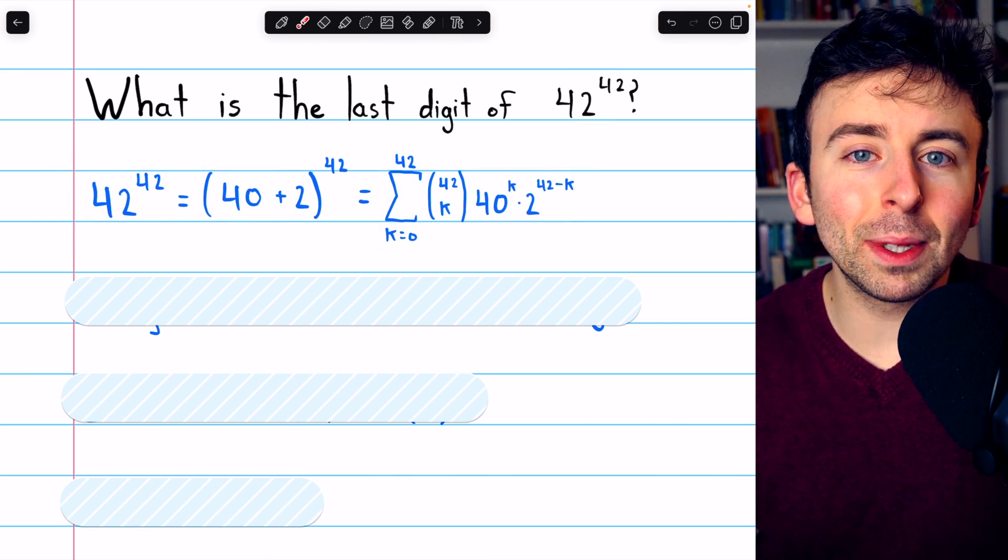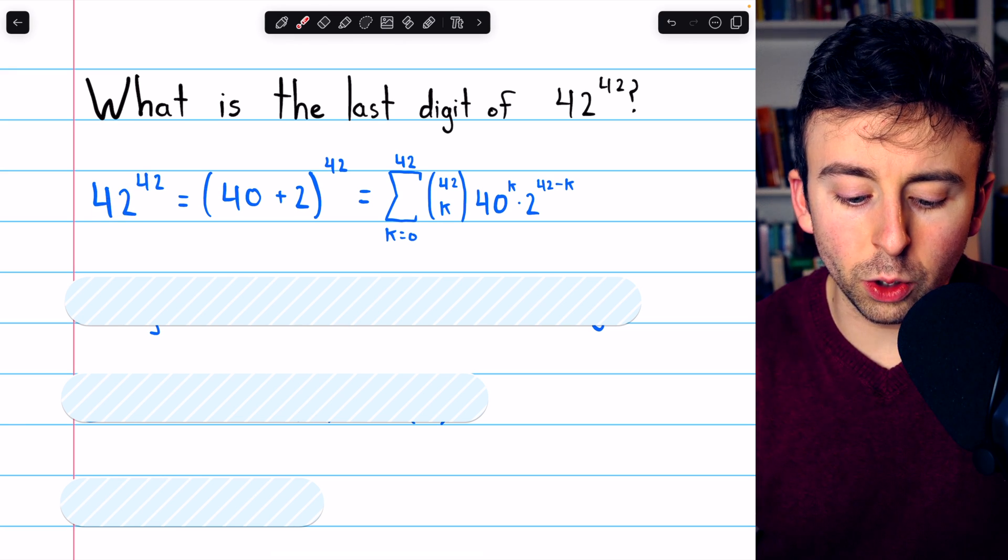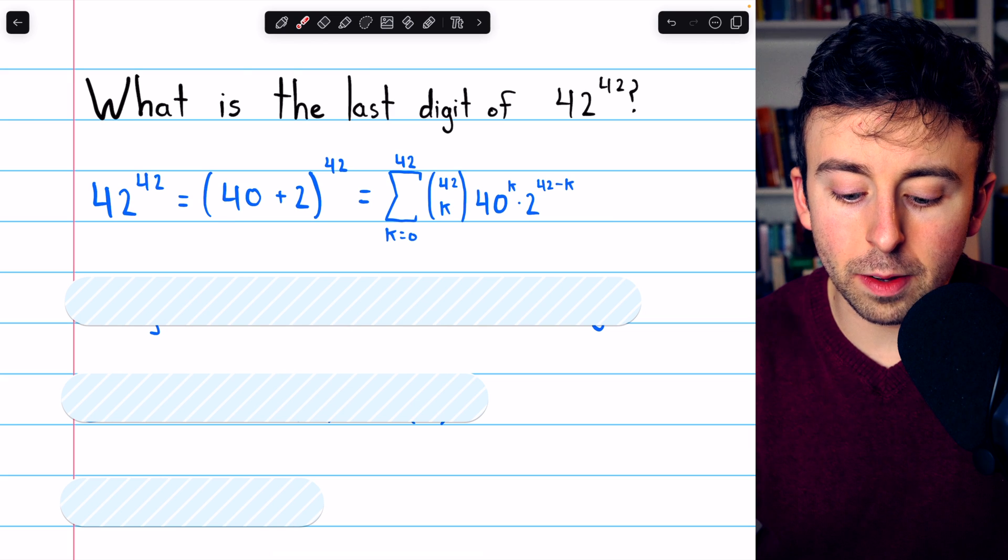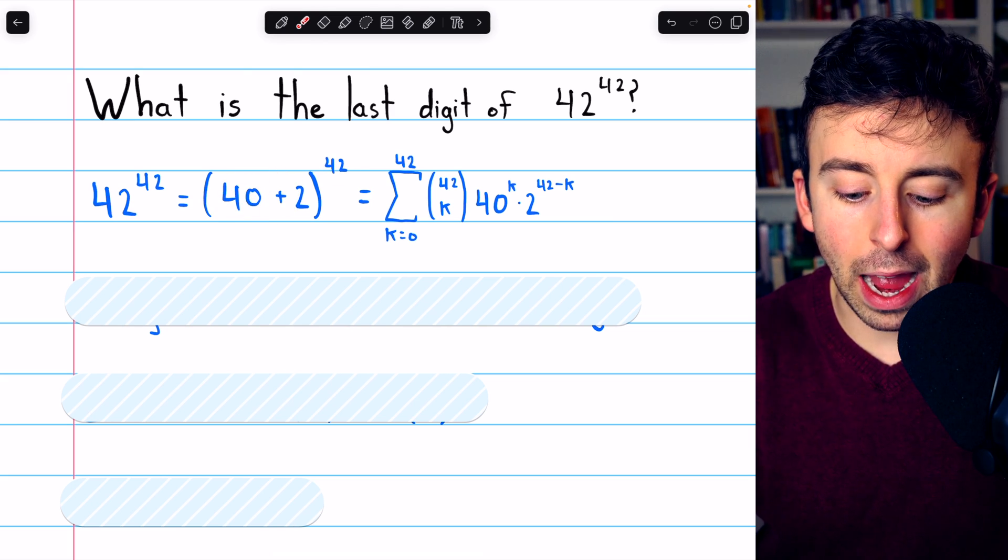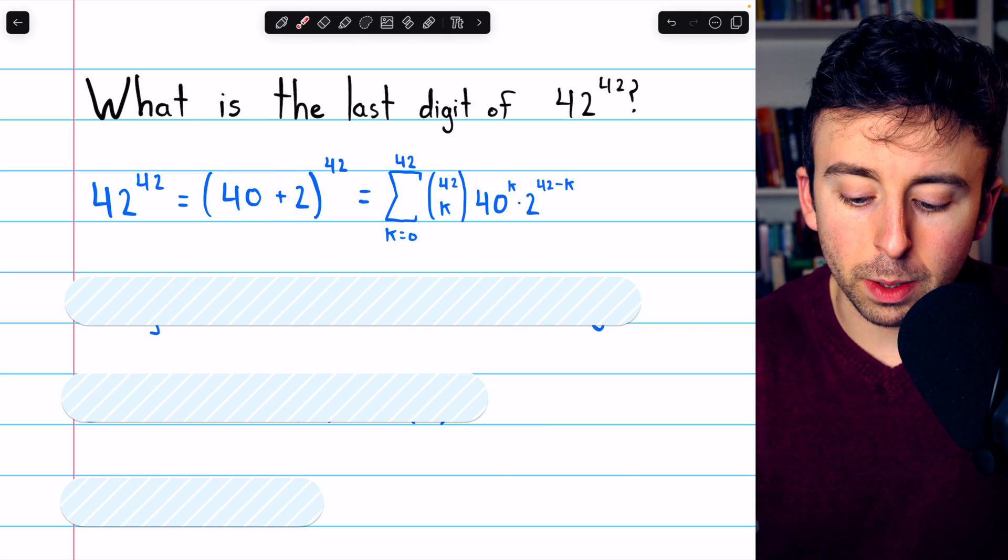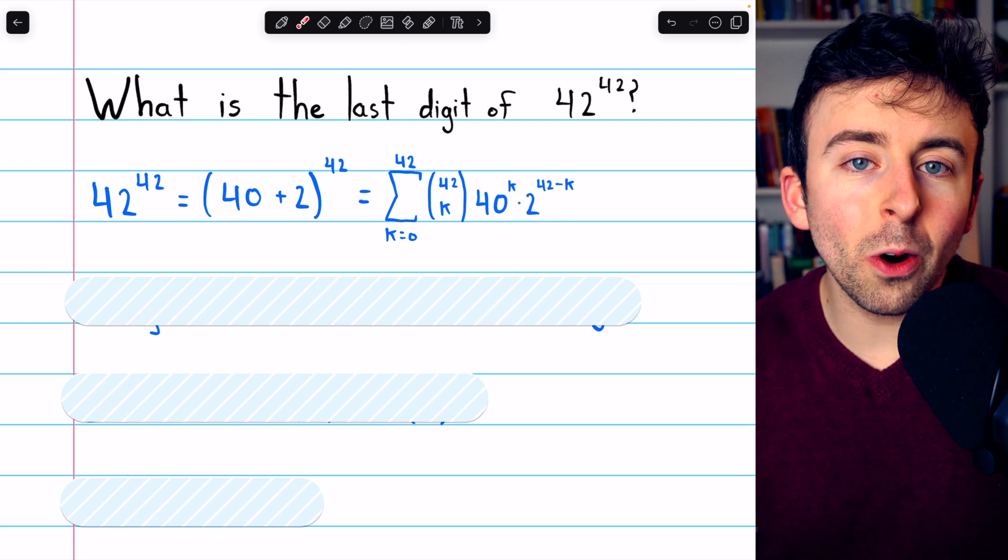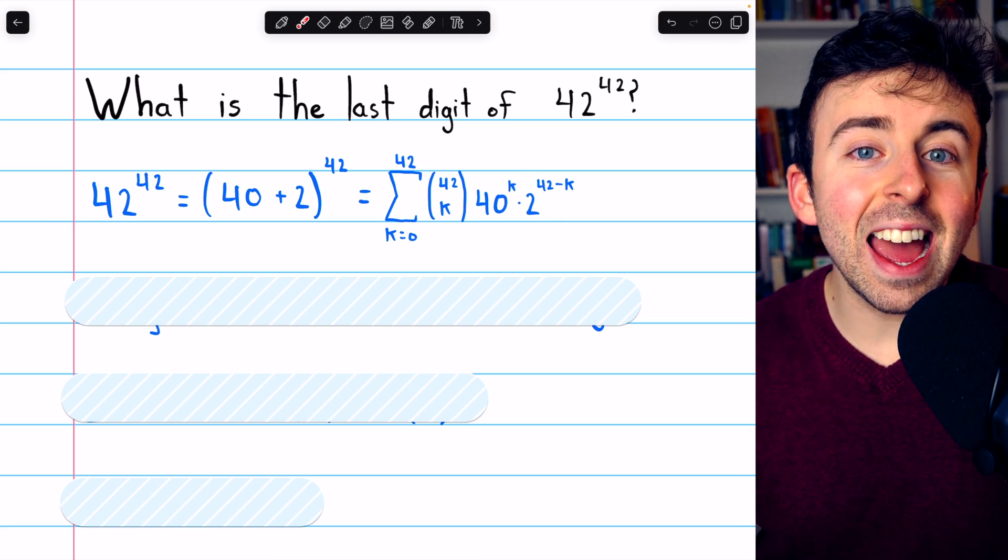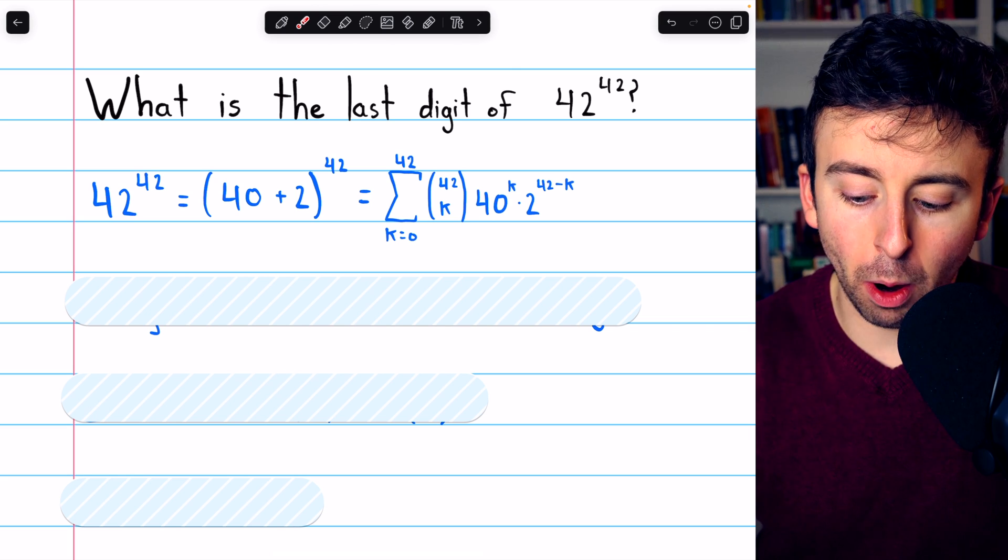First, though, a quick application of the binomial theorem. 42 to the 42, of course, is equal to 40 plus 2 to the 42. We can expand this power of a binomial using the binomial theorem. This must be equal to this sum, and it's important to note in this sum that every term has a factor of 10, part of the 40.